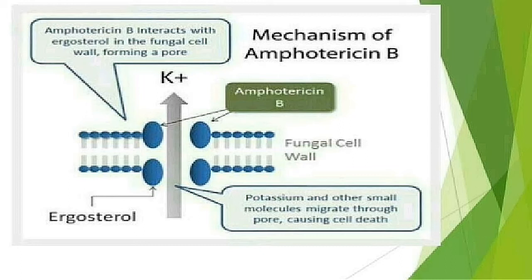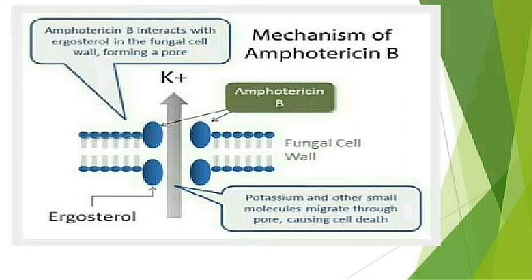Ergosterol is the main component of the fungal cell membrane. Amphotericin B binds to and interacts with ergosterol in the cell membrane, slowly forming a pore in the fungal cell membrane. As pores are formed, ions, amino acids, potassium, and other contents inside the cell start moving out, causing cell death. So the main action of amphotericin B is pore formation leading to ion leakage and fungal cell death.